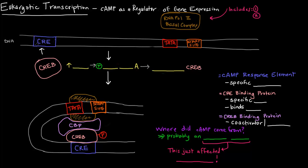In the last video, we talked about a general scheme about what goes on with eukaryotic transcription in terms of enhancer involvement. Here, I want to talk about cyclic AMP as a specific regulator of gene expression.